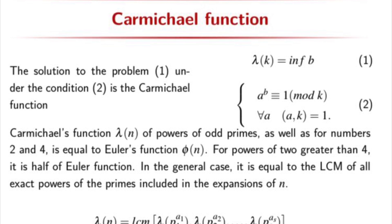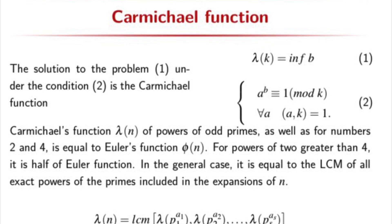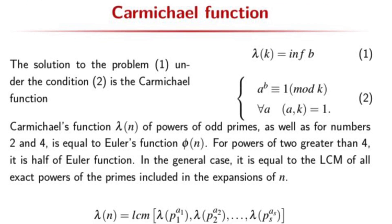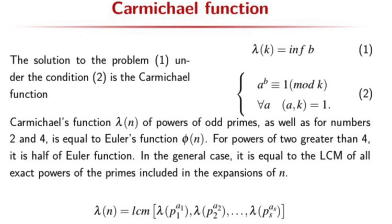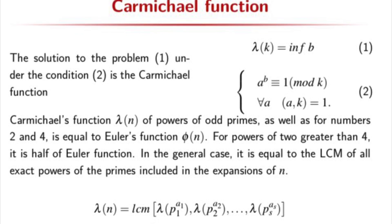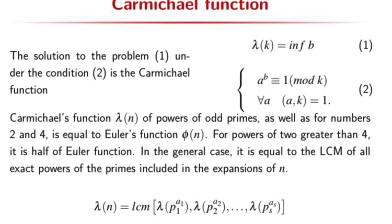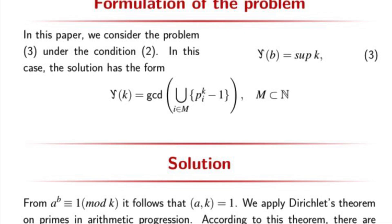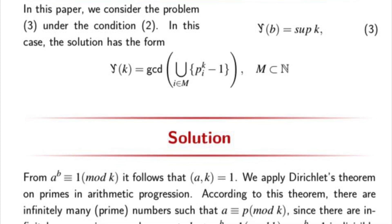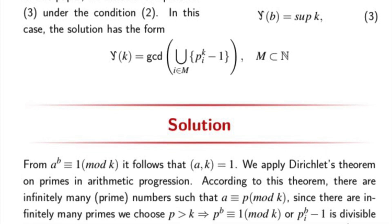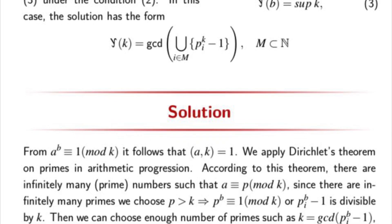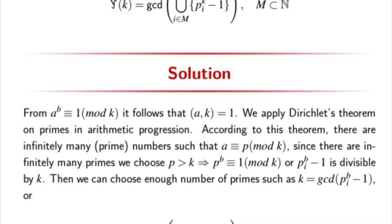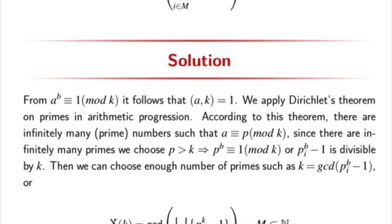The solution of problem number one under condition two is the Carmichael Function, and a bit lower you can see the definition of this function. In this paper, we consider problem three under condition two. In this case, the solution has the form like this.